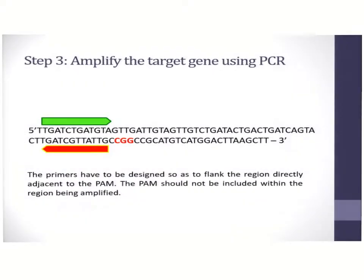The third step involves amplification of the target gene using PCR. The green and red arrows designate the forward and reverse primers which will amplify the target gene. Care should be taken to ensure that the PAM motif — indicated as CGG — is adjacent to the target gene.